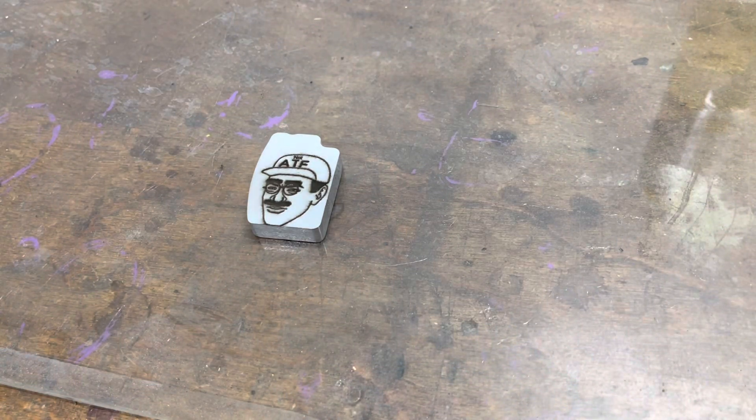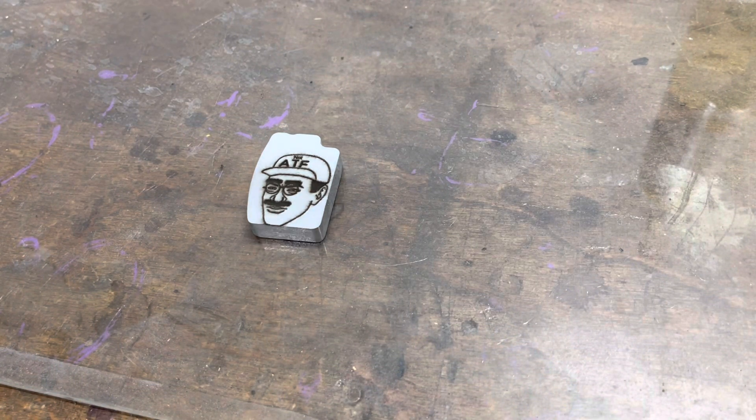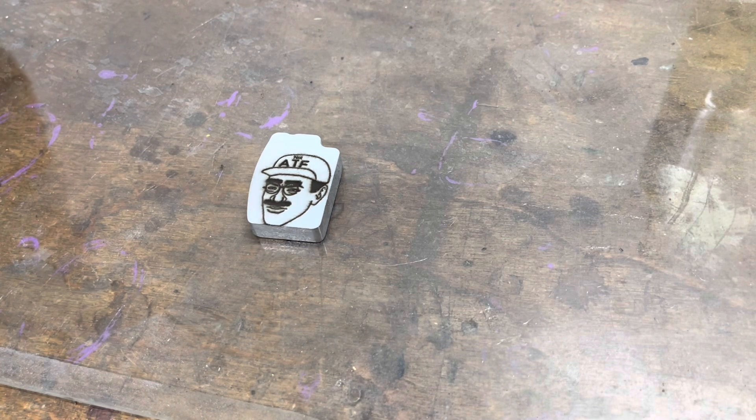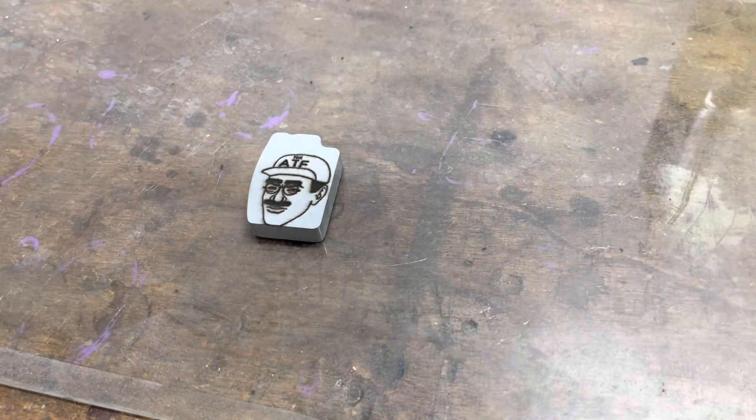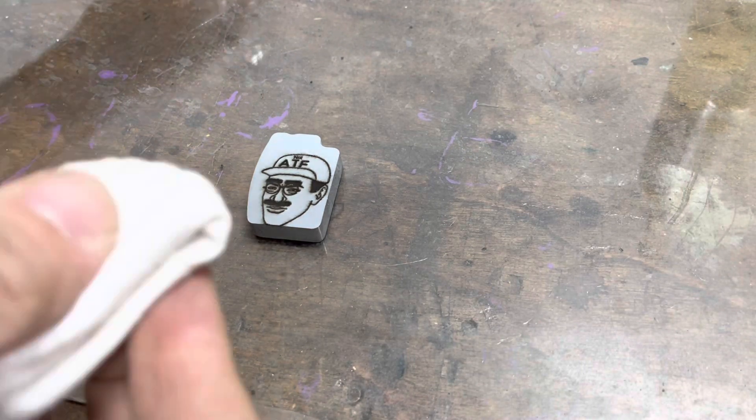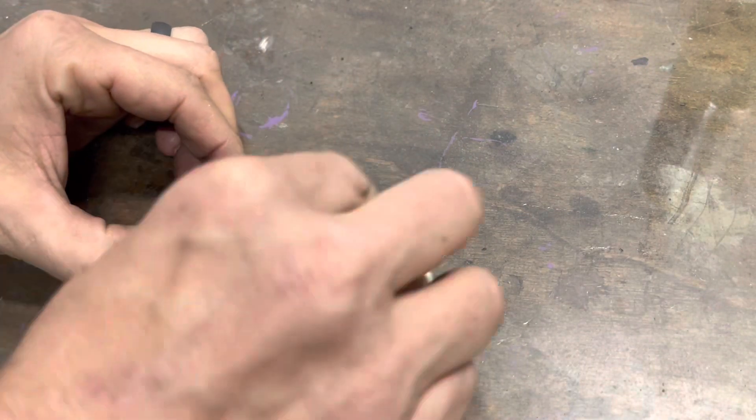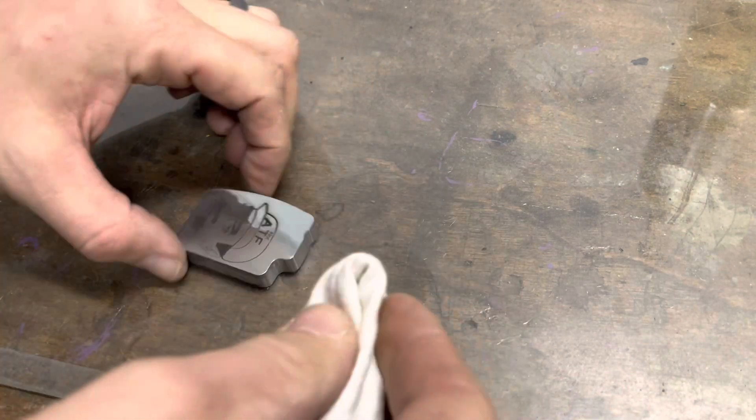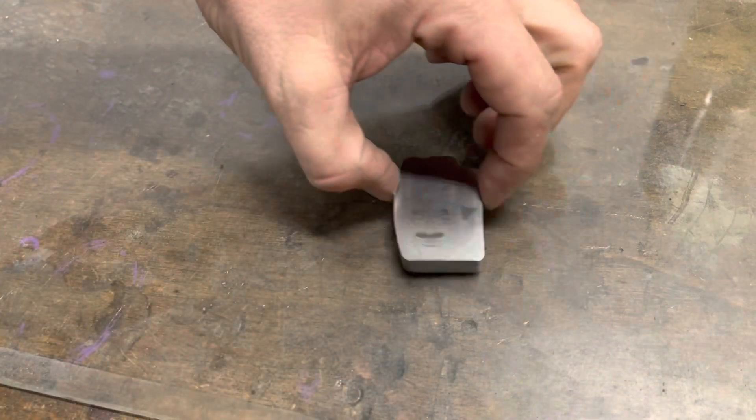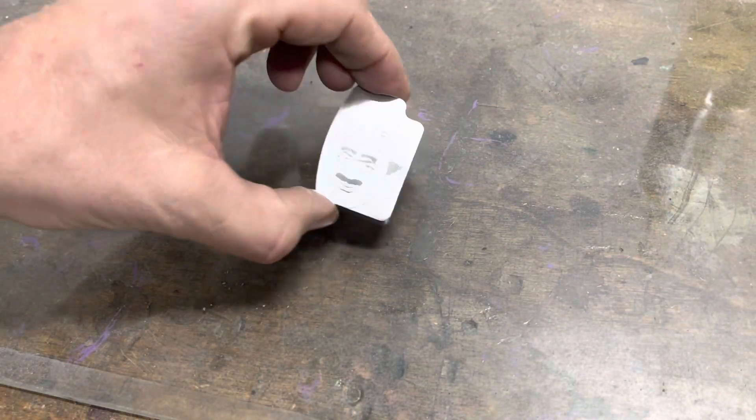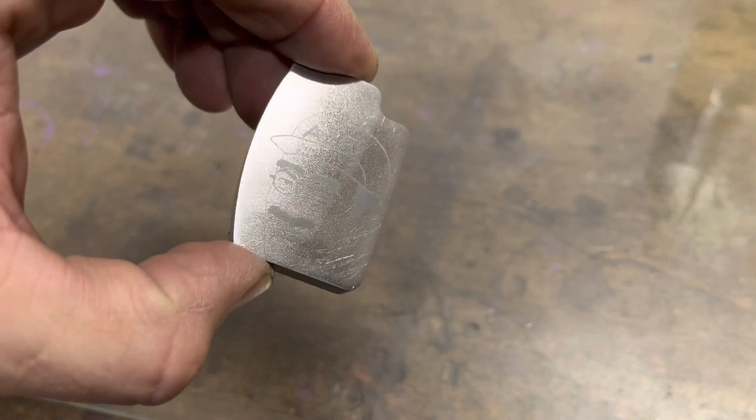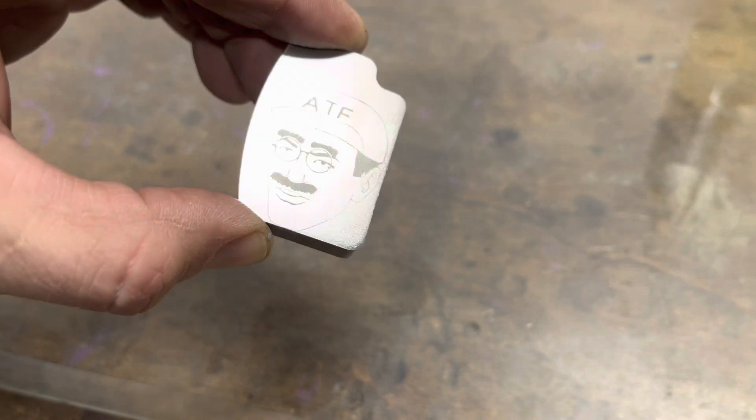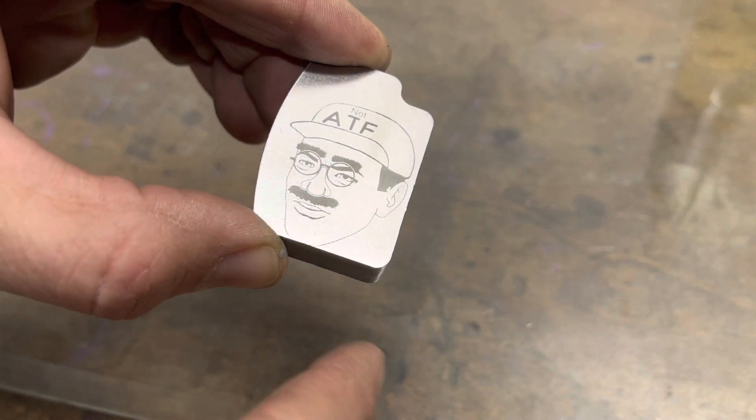All right, so let's get the galvanizing compound off this thing. Find the rag. I don't know if the camera, so it turned out pretty well. It's got like a brushed finish on there, but obviously I cut off his chin.